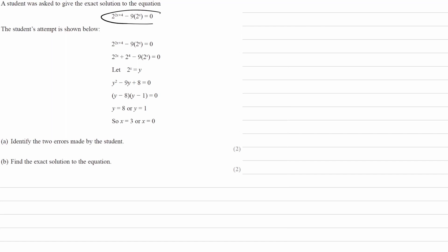Try solving this — it is a hidden quadratic, so think about how you would go about solving it. Then once you have your solution, compare what you have to the student's attempt and hopefully you should be able to find the two mistakes.